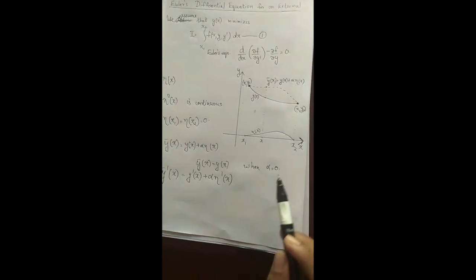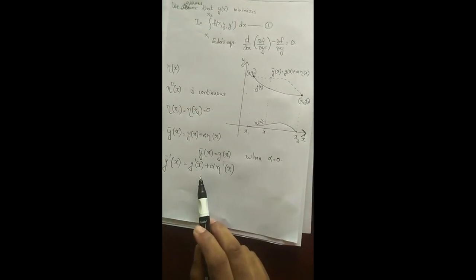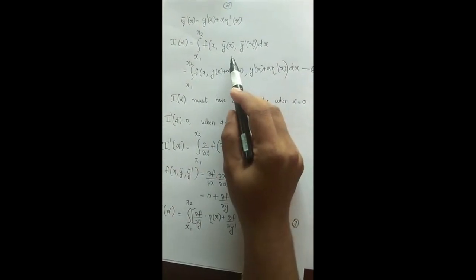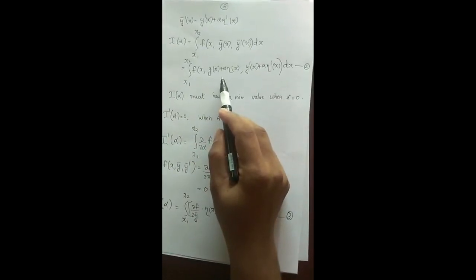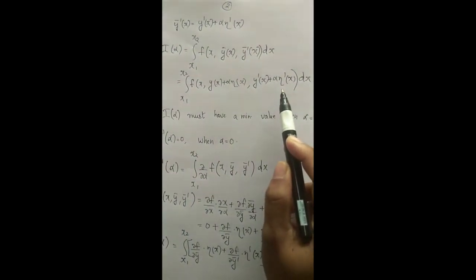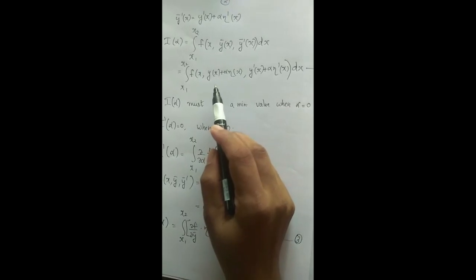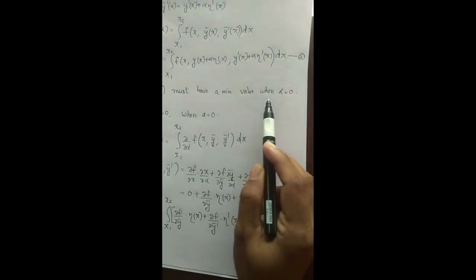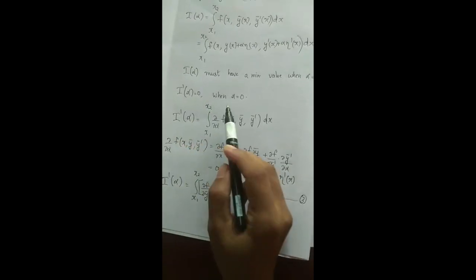With a fixed η(x), we substitute the values of ȳ(x) and ȳ'(x) = y'(x) + α·η'(x) into integral I and obtain I as a function of α, given by integral from x1 to x2 of f(x, ȳ(x), ȳ'(x)) dx. Since y(x) minimizes I and ȳ(x) = y(x) when α = 0, I(α) must have a minimum value when α = 0. Thus, from elementary calculus, I'(α) = 0 when α = 0.